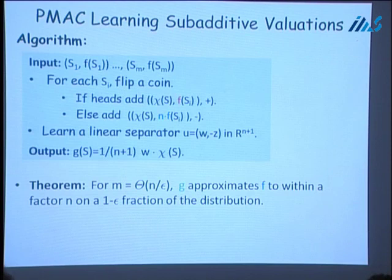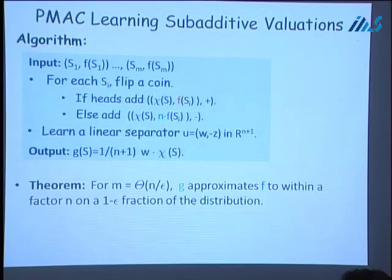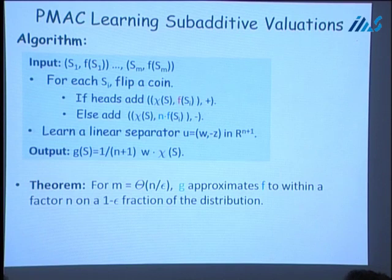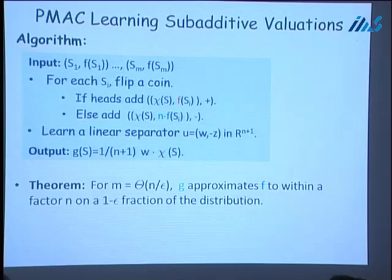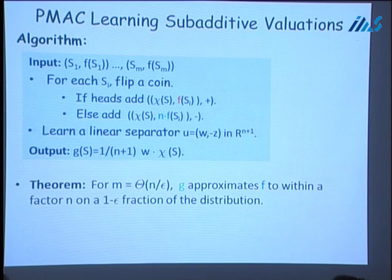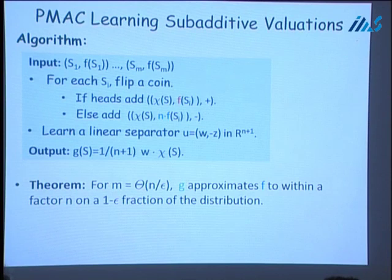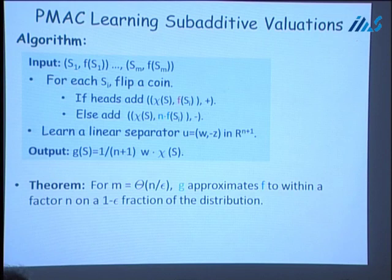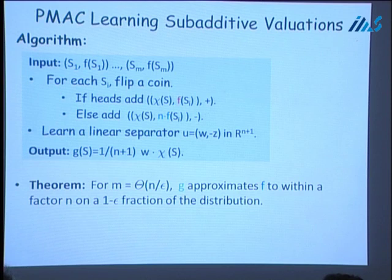Given this claim, our algorithm is as follows: the input is a set of training examples (S1, F(S1)), (S2, F(S2)), ..., (Sm, F(Sm)). For each example Si, we flip a coin — if heads, we add a positive example to the training set; otherwise we add a negative example. Then we learn a linear separator in R^{n+1} and output the linear function induced by that separator. Using standard sample complexity results for learning Boolean functions, if the number of examples is roughly N over epsilon, then with high probability G approximates the target within a factor of N on most examples from the same distribution.